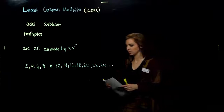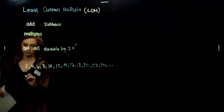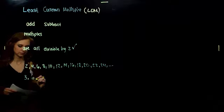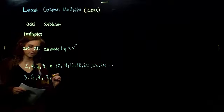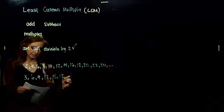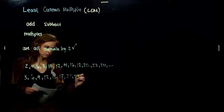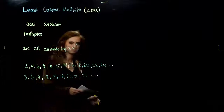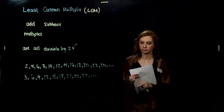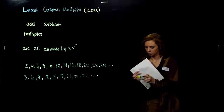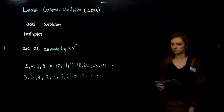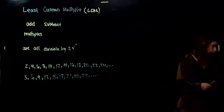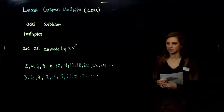And starting with 3, what are its multiples? We have: 3, 6, 9, 12, 15, 18, 21, 24, 27. Now let's look between them and ask: what are the common multiples that they share?